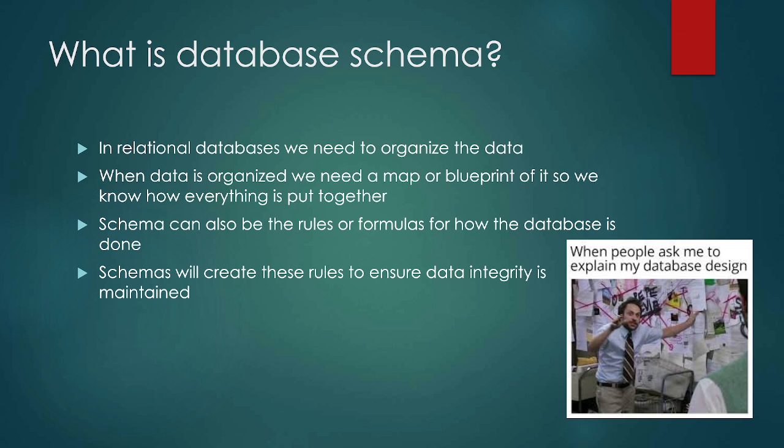When we're talking about databases we have to figure out how our data is being organized. In a relational database we want to organize our data in particular ways, and we need to have some variety of map so that we know what everything is. Schemas can also include rules or formulas for how the database is structured, and using these schemas will make sure that data integrity is maintained.